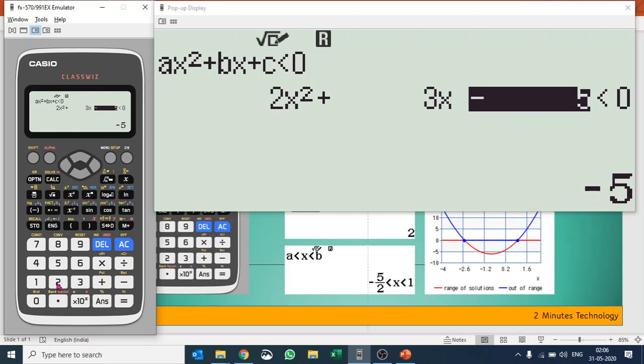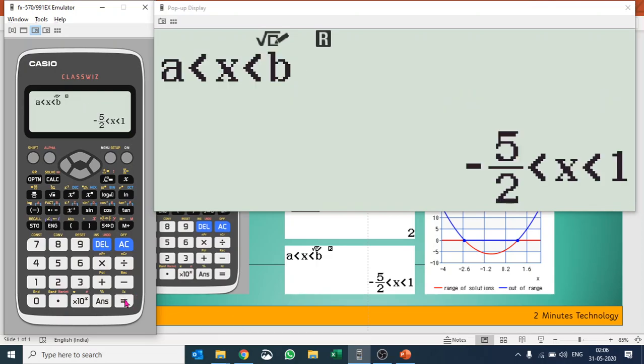I press equals, and it gives you the value of x between a and b. So all possible values of x are x > -5/2 and x < 1.